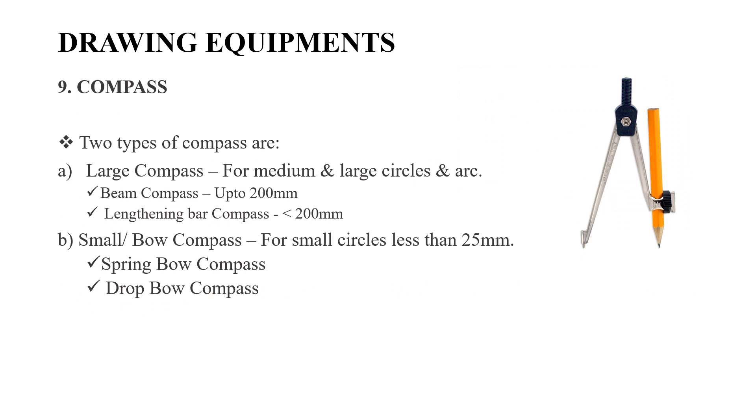Compass sections are of two types. Large compass is used for medium and large circles. Large compass has two types: beam compass and lengthening bar. Beam compass is up to 200mm. Lengthening bar compass is less than 200mm.